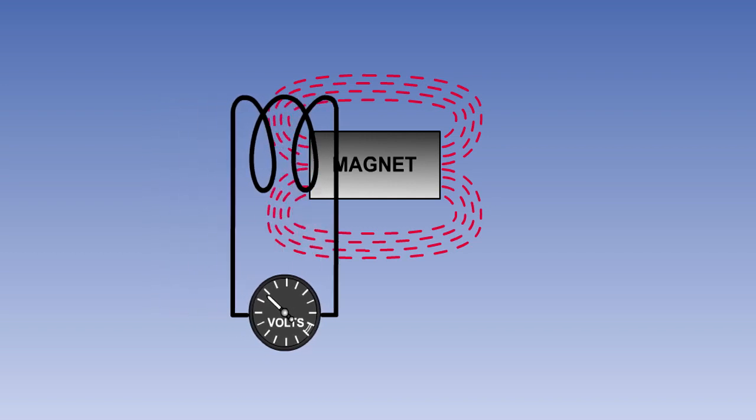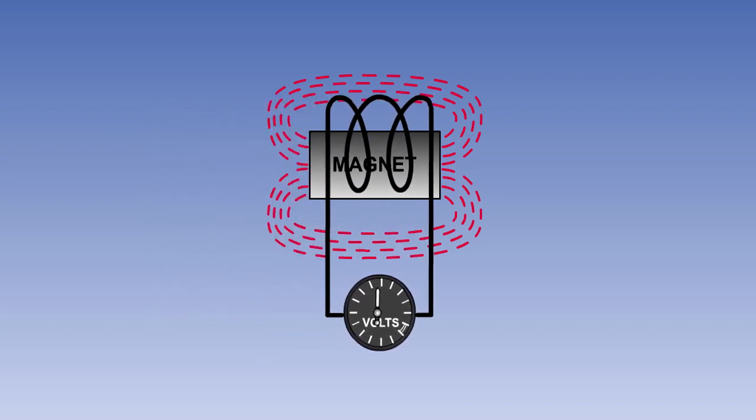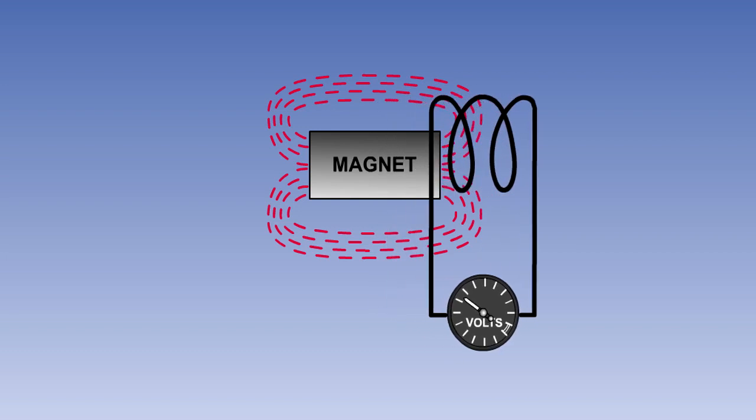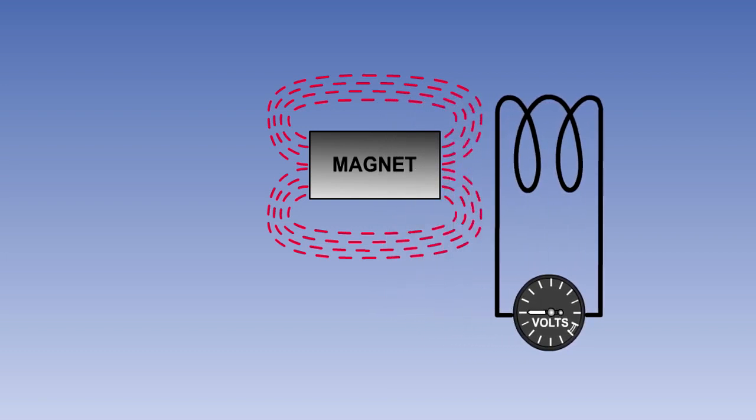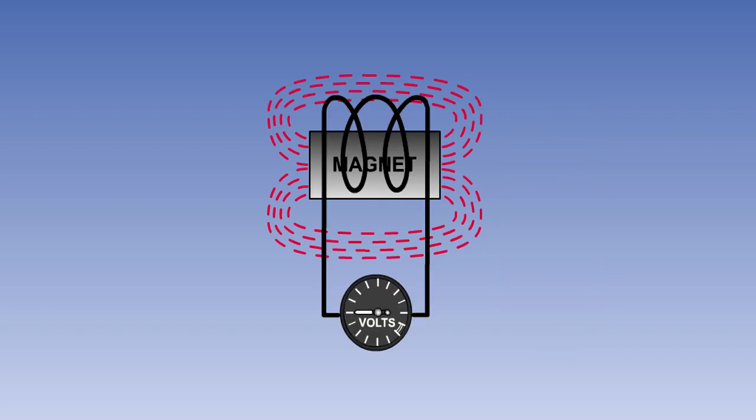If a coil of wire is moved through this field, cutting through the lines of flux, an electromotive force or EMF will be induced in the coil. If both the coil and the magnetic field are stationary, no EMF will be induced. There has to be relative movement between the lines of flux and the coil for an EMF to be induced.